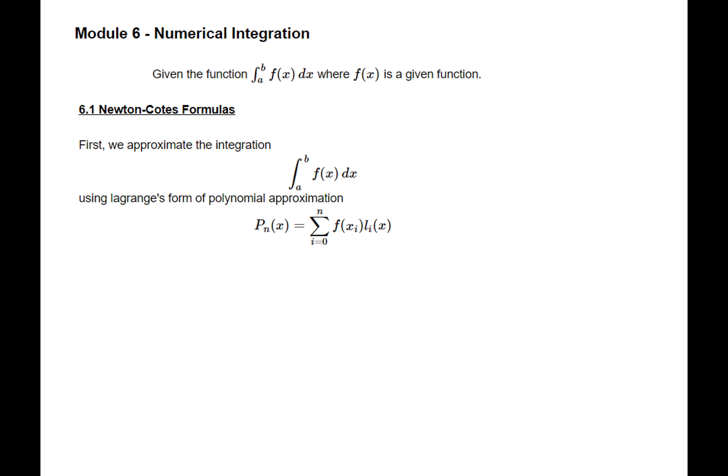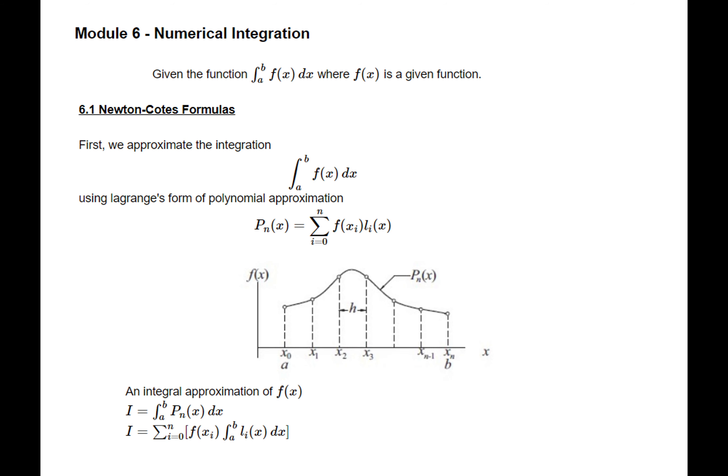One of the most basic numerical integration methods is what we call the Newton-Cotes formula. Given the integral of A to B of f of x dx, we can use a Lagrange form of polynomial approximation, which is simply a summation of f of x times the boundaries from A to B. Graphically, this represents the area from point A to point B under the curve f of x — and that area is our integration value, the integral of f of x from A to B.